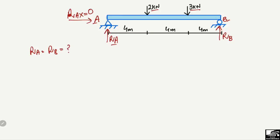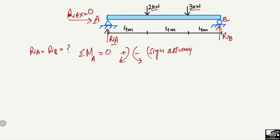To find RA and RB — both unknowns — we use the equilibrium equation: summation of moments at any point equals zero. We take moments at point A. We assume clockwise moments are positive and anticlockwise moments are negative. This sign convention must be kept consistent throughout the problem.